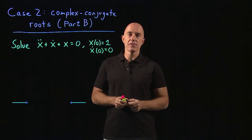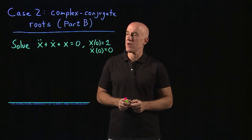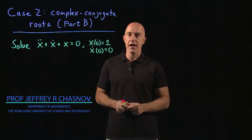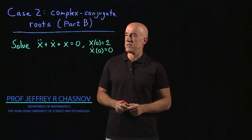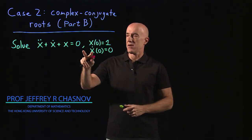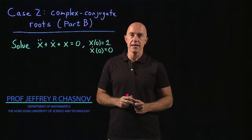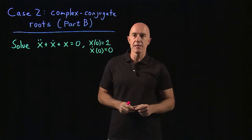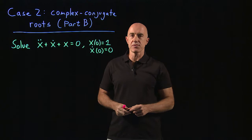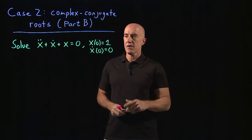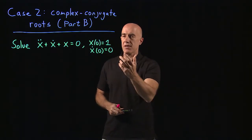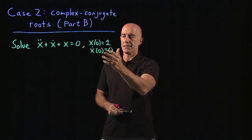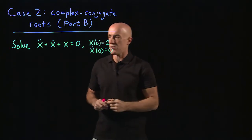Now that we know what to do when we have complex conjugate roots of the characteristic equation, we can try and work an example. Let's solve x double dot plus x dot plus x equals zero, with initial conditions x of zero equals one and x dot of zero equals zero.